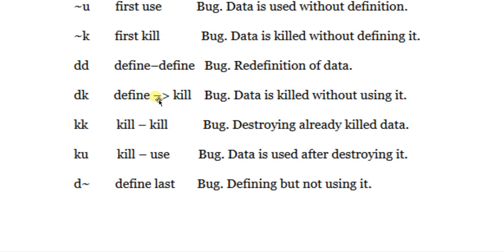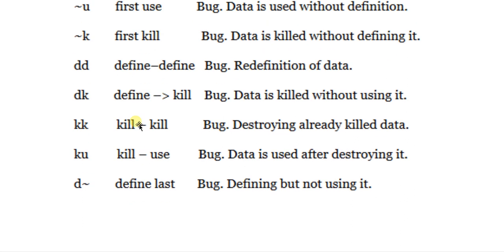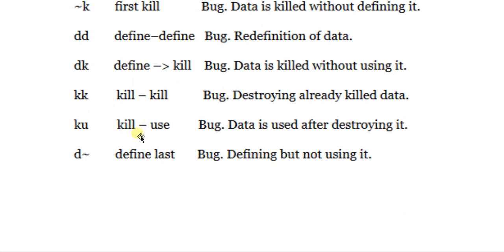Define followed by kill (DK) means we define a variable and then kill it without using it — that is also a bug. Kill followed by kill (KK) means we kill a variable and then kill it again. You can think of variables as humans: once a human is killed, there is no need to kill it again. Similarly, if a variable is already killed, killing it again is over-killing and a logical bug.